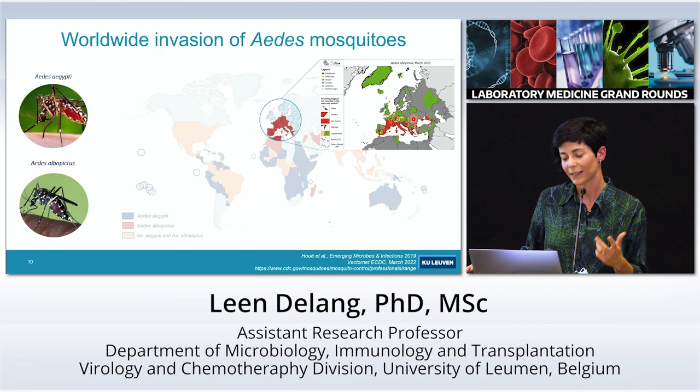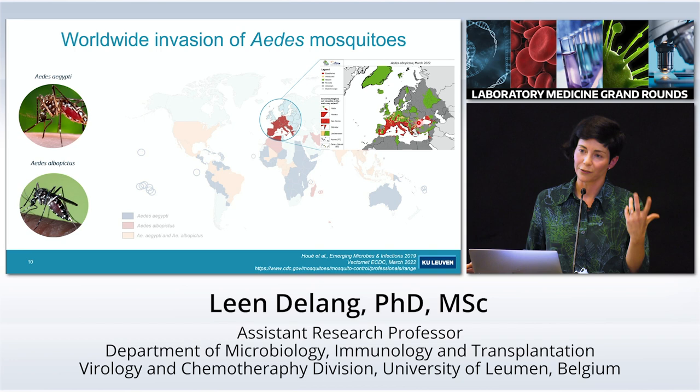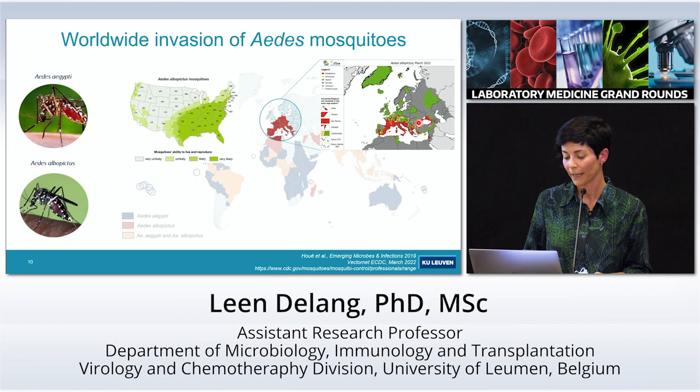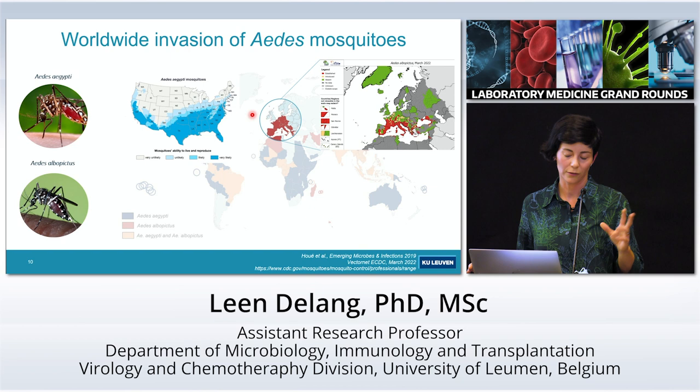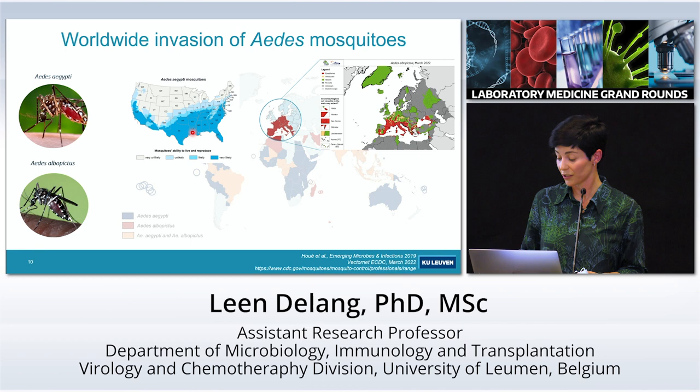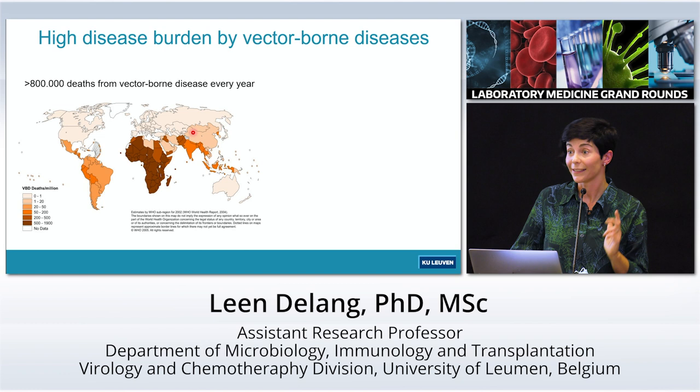Where it's yellow on the map, the tiger mosquito has been introduced but is not yet established. For example, Belgium, where I'm from, only has introductions, but we expect it will become established quite soon. In the United States, Aedes albopictus is present in the east and south, and Aedes aegypti is present in similar regions and also the southwest, so there is also potential for invasion there.